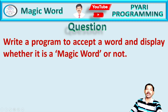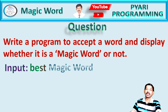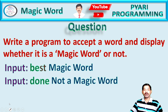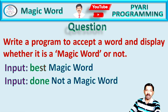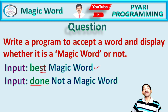Let's see the question. The question says: write a program to accept a word and display whether it is a magic word or not. So we will accept a word and apply a mechanism to tell us whether it is a magic word or not. If my input is 'best', then it is called a magic word. If my input is 'done', then it is not a magic word. The difference is that in 'best', 'st' are consecutive characters — that's why it is called a magic word. There is no consecutive character available in 'done'. That means if a word contains consecutive characters, then it is called a magic word.